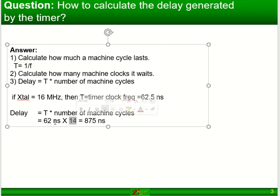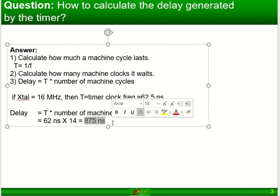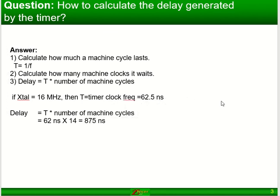I know what the time of each one is, and that gives me a total time of 875 nanoseconds, which is the delay I will get. If you know what delay you want, then you'll have to calculate the number of machine cycles needed.